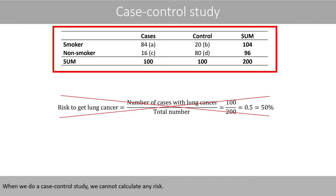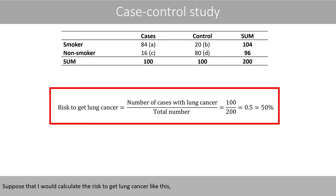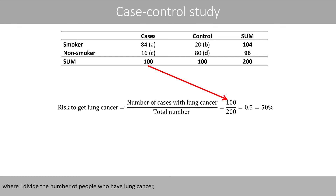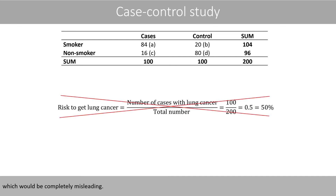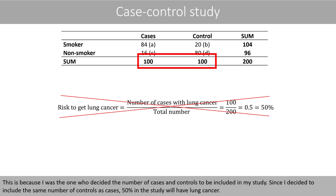When we do a case-control study, we cannot calculate any risk. Suppose that I would calculate the risk to get lung cancer by dividing the number of people who have lung cancer by the total number in our study. Then we see that the risk to get lung cancer is 50%, which would be completely misleading. This is because I was the one who decided the number of cases and controls to be included in my study. Since I decided to include the same number of controls as cases, 50% in the study will have lung cancer.